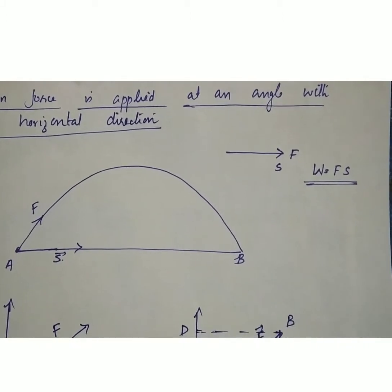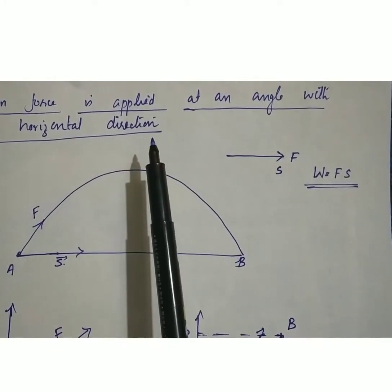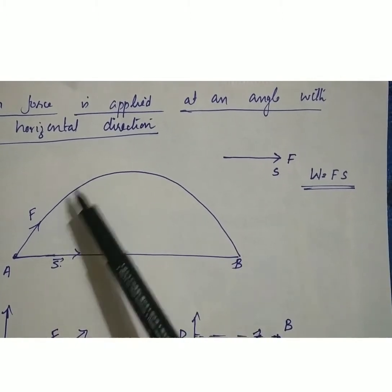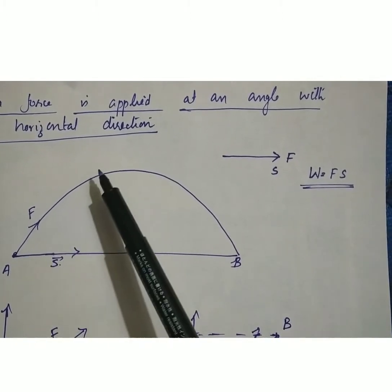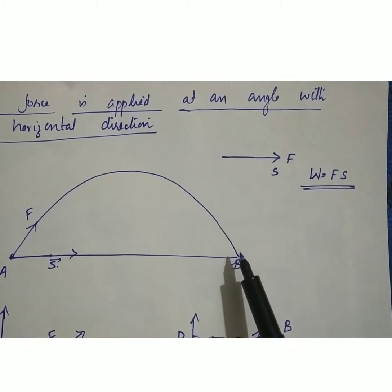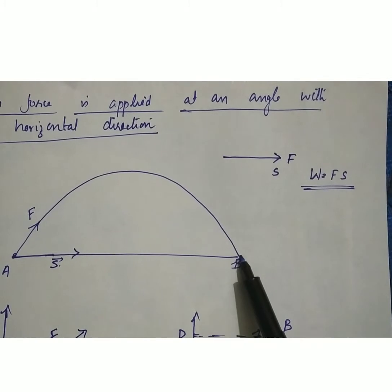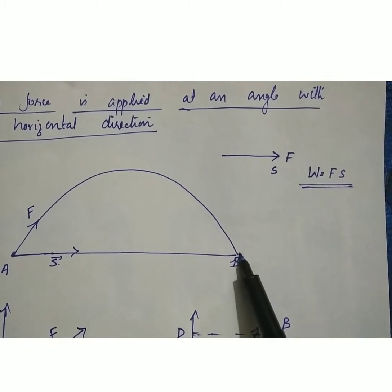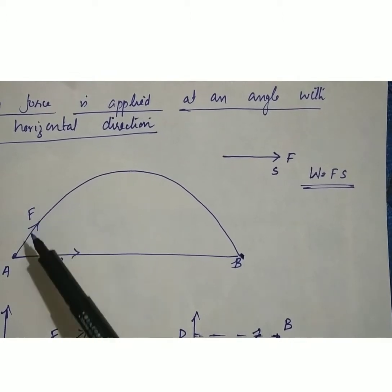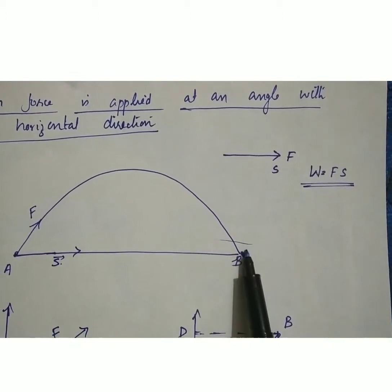Now we are going to discuss when a force is applied at an angle with the horizontal direction. For example, when we throw a stone, we apply the force at an angle. Then after moving in the upper direction, it falls down and reaches the surface of the earth. So here, force is acting at an angle but the displacement is AB — that means in the horizontal direction.